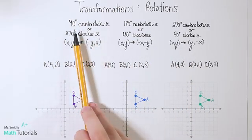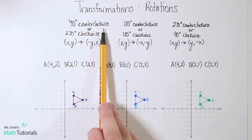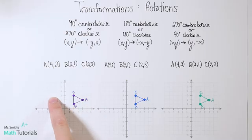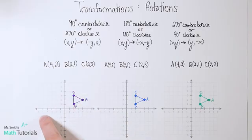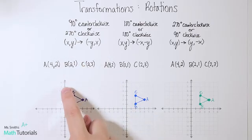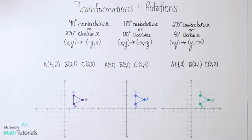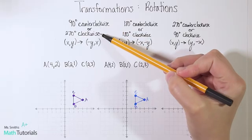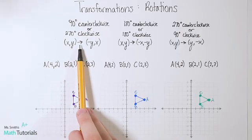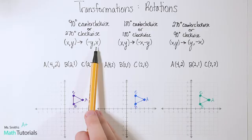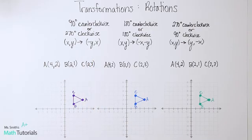The first rule is going to be 90 degrees counterclockwise. Moving 90 degrees counterclockwise is the exact same thing as moving 270 degrees clockwise. Think about clockwise like a clock — you start at 12 and move around. These two end up in the exact same place. The rule is: (x, y) becomes (-y, x). We flip our x and y positions and the y becomes negative.